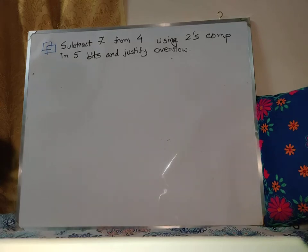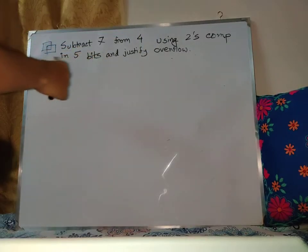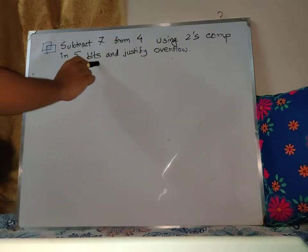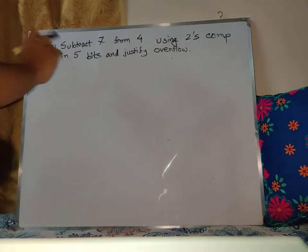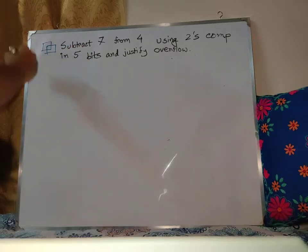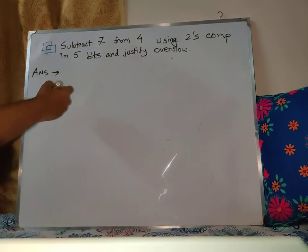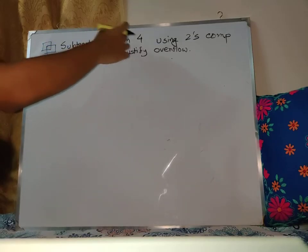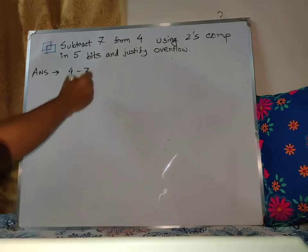Okay, so let's move on to another example. In this example we're going to subtract 7 from 4 using 2's complement number system and using 5 bits, and we'll justify whether there is an overflow or not. The first thing to do is mathematically represent this. The way to mathematically represent it is subtract 7 from 4, that is 4 minus 7.